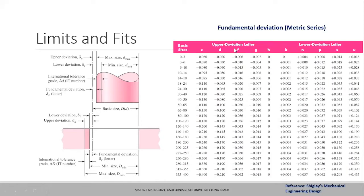The next chart represents the fundamental deviation amounts. In this chart, there are negative and positive values. Negative values correspond to letter grades C, D, F, and G. For letter grade H, the fundamental deviation is zero. For C, D, F, and G, the fundamental deviation is negative, meaning the shaft dimension is less than the basic size. So if the shaft is less than the basic size with letter grades C, D, F, or G, this would result in a clearance fit.